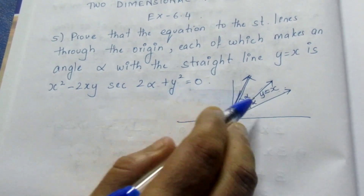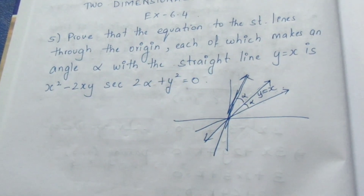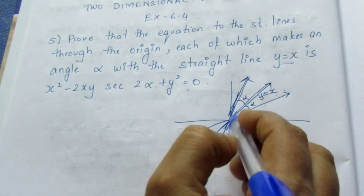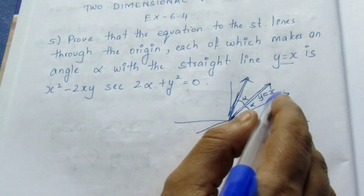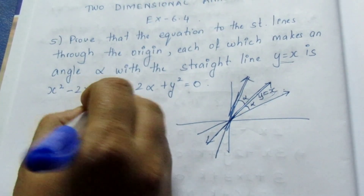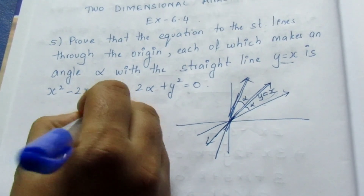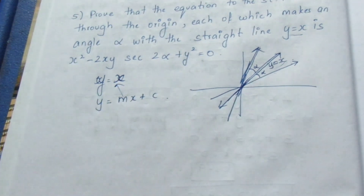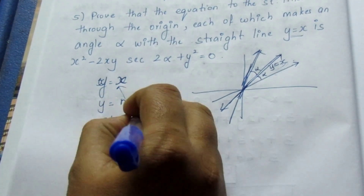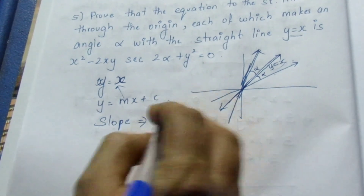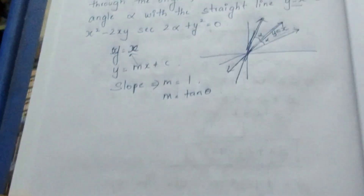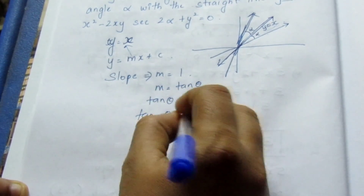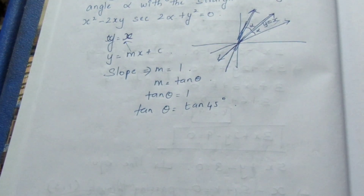For the line y = x, we write it as y = mx + c. Here m = 1, so the slope is equal to 1. Since m = tan θ, we get tan θ = 1, which gives tan θ = tan 45°, so θ = 45 degrees. The line y = x makes an angle of 45 degrees with the x-axis.